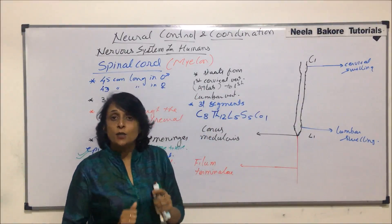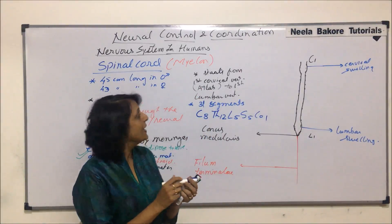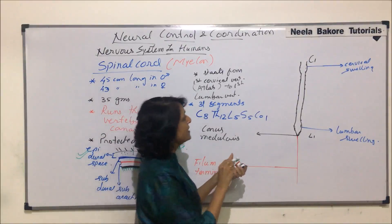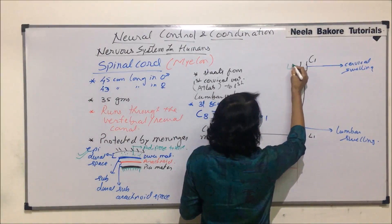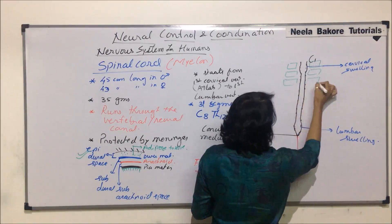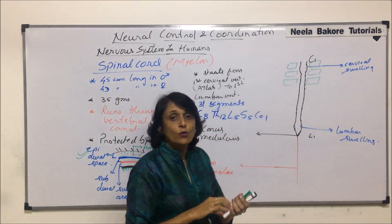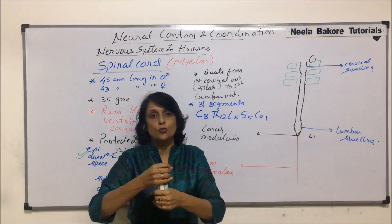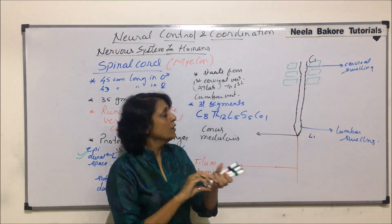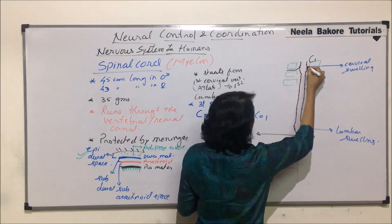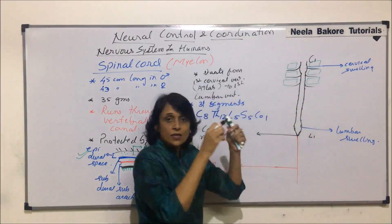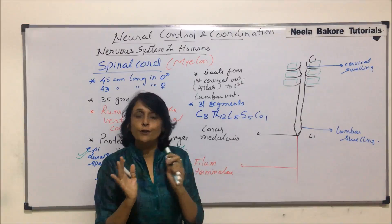From the spinal cord, nerves arise and come out of the backbone between the vertebrae. If we consider the vertebrae stacked one over another with the spinal cord passing through, the nerve fibers emerge between adjacent vertebrae — a pair from each level. This is how the fibers come out of the vertebral column.